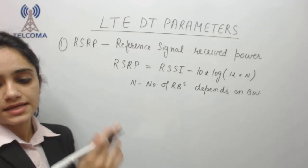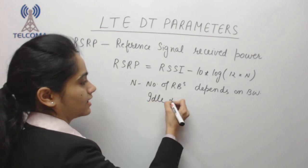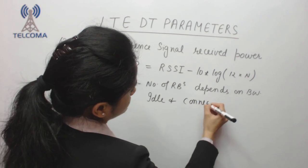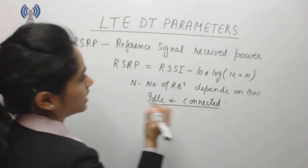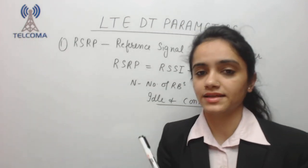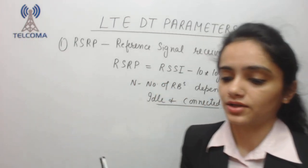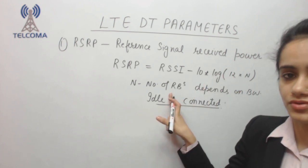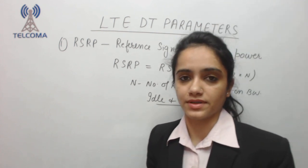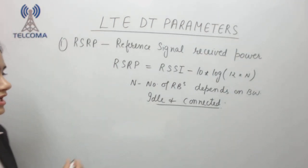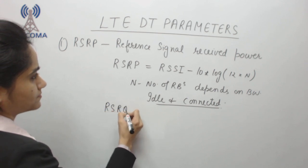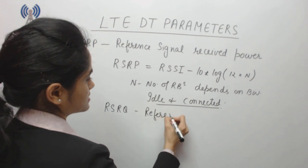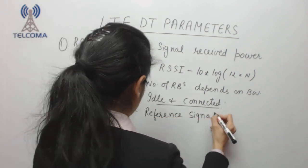RSRP is the most important parameter for drive test and it is used in both idle mode and connected mode. It is used to find out the signal intensity according to the number of resource blocks, and the number of resource blocks depends upon the total bandwidth. Similarly, we have RSRQ — Reference Signal Received Quality.